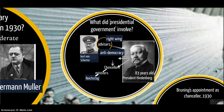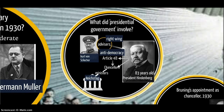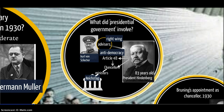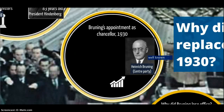Hindenburg is now appointing chancellors. That's his right as president, but none of the chancellors he appoints are going to be representatives of a party in a majority coalition. Any chancellor has little chance of getting enough support in the Reichstag for laws they want to propose. So any chancellor is going to need the support of President Hindenburg to push through laws using the emergency power under Article 48. You effectively get what are called the Article 48 chancellors — they're chancellors relying on the president to push legislation through using Article 48.